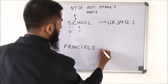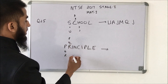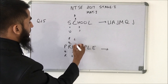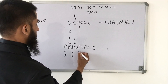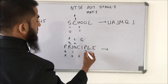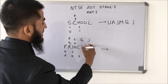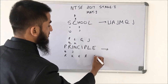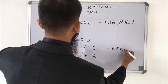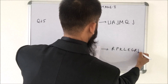Applying the same pattern to find the code for PRINCIPLE: P→Q→R, R→P→Q, I→J→K, N→L, C→E, I→H→J, P→Q→R, L→J→K, E→F→G. So the code comes out as R, P, K, L, E, G, R, J, J.